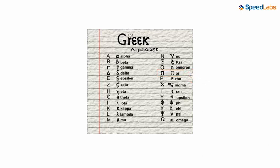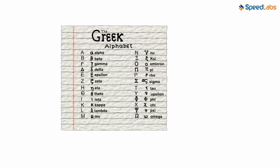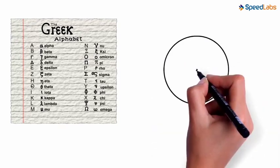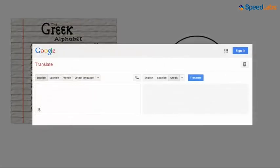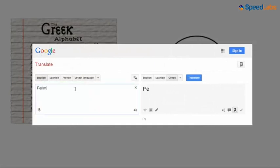We just saw that pi has got something to do with the perimeter or the circumference of the circle. Let's use Google Translate to see the Greek equivalent of perimeter. As we can see, the first letter of the Greek word is pi.